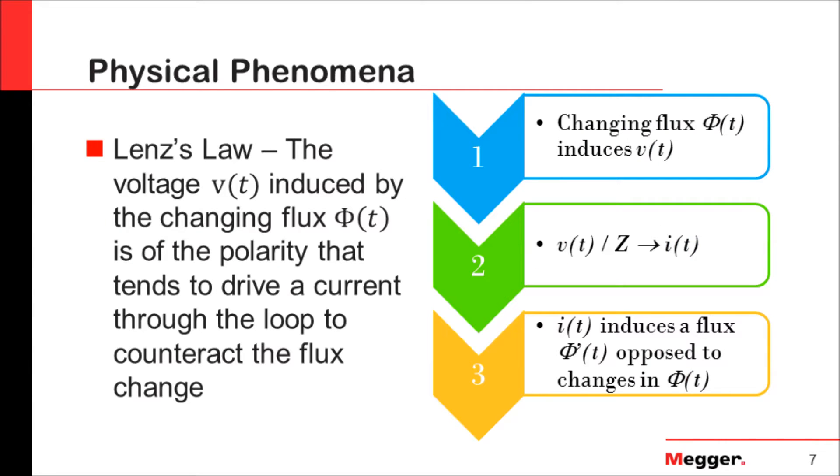Let's understand Lenz's law. Because here, we're saying that the voltage that is induced by the change in flux is of the polarity that tends to drive a current through the loop to counteract the flux change. What is it trying to tell us? That basically, we have a change in flux induces a voltage as a function of time. But this voltage, if we divide this voltage to the impedance of the system, we basically have a current as a function of time. And this current that is now being created, it's also inducing a flux, this Φ prime of t, which is opposed in direction to the changes in the flux originally generated as a function of time.